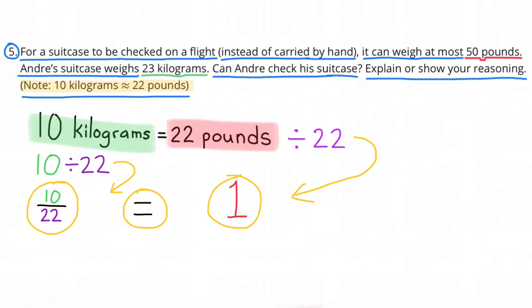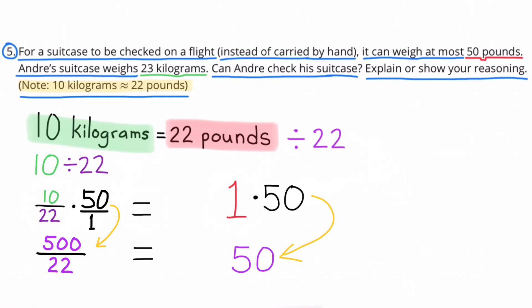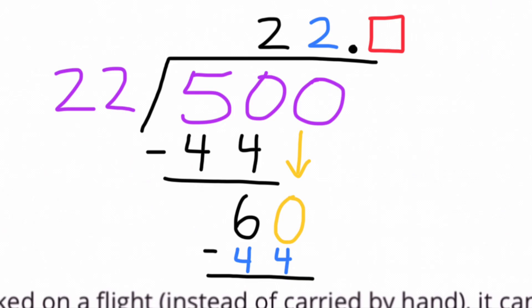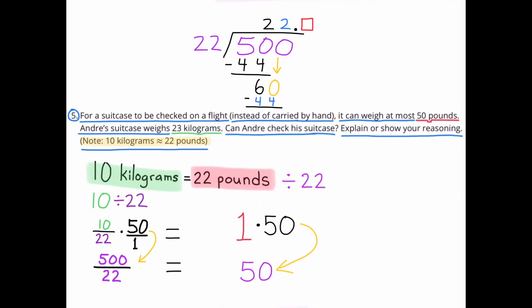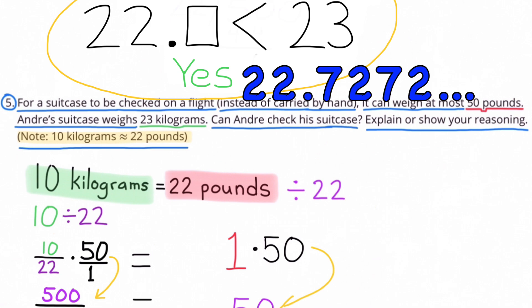Next, I multiply both sides by 50 so the right-hand side equals 50 pounds. 10 over 22 times 50 equals 500 over 22. And 500 divided by 22 equals 22 point something. The largest digit that could possibly go there would be a 9, giving 22.9 kilograms — which is less than 23 kilograms. So the answer is yes: Andre can check his suitcase. In fact, 500 divided by 22 is 22.7272 repeating, which is less than 23.